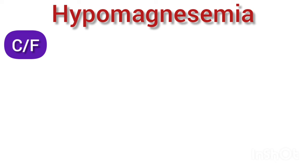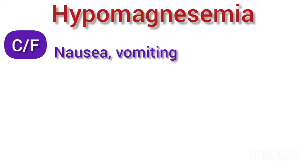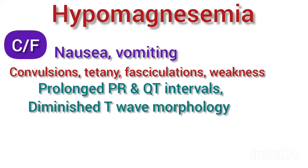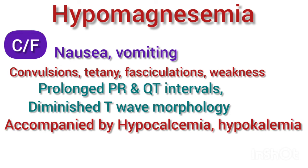The clinical features of hypomagnesemia include nausea and vomiting, weakness, convulsions, tetany, and fasciculations. On the electrocardiogram, there are prolonged PR and QT intervals and diminished T wave morphology. Hypomagnesemia is commonly accompanied by hypokalemia and hypocalcemia.